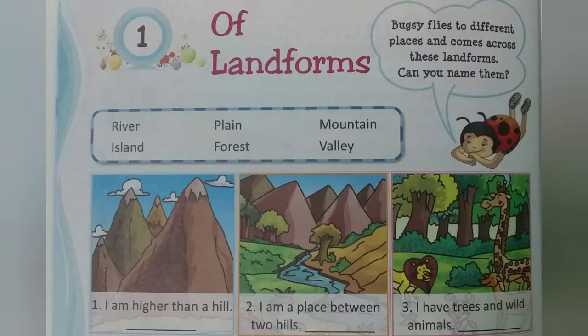Let's start with Chapter 1. Students, what will we do in this exercise? With the help of the sentences, find the names of the landforms from the clue box. Now see, Number 1: I am higher than a hill. Answer is Mountain.